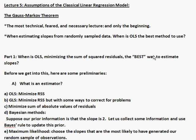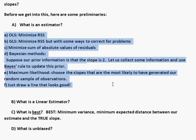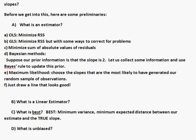Welcome to part C of lecture 5, looking at the Gauss-Markov theorem and the assumptions of the classical linear regression model. We're asking the question: when is ordinary least squares — minimizing the sum of squared residuals — the best way to estimate slopes? We discussed that there are many other ways to estimate a slope, and ordinary least squares is just one of them, so we need to figure out when OLS is the best one.